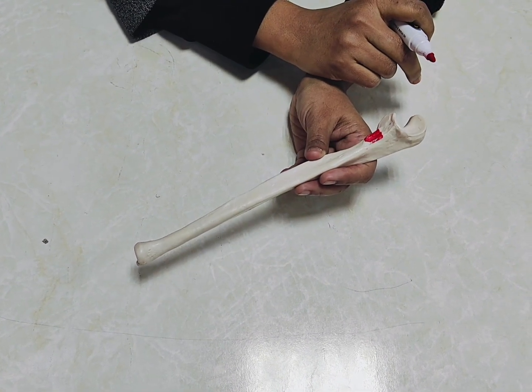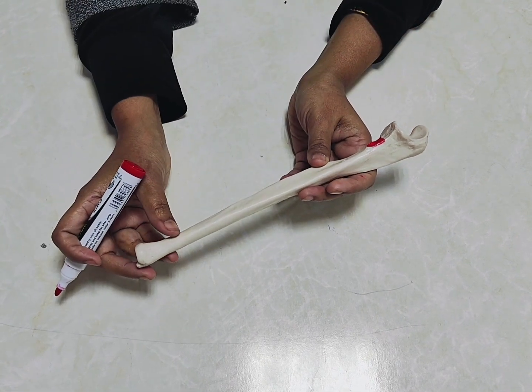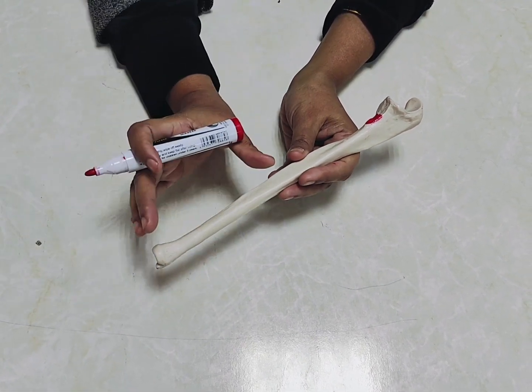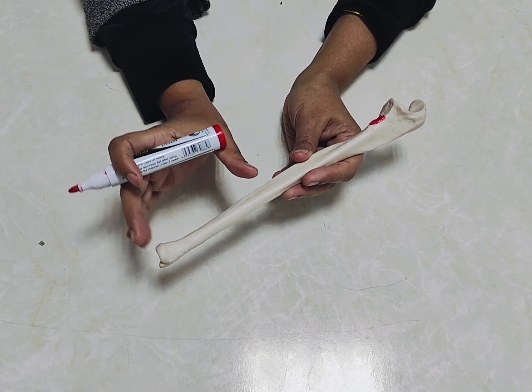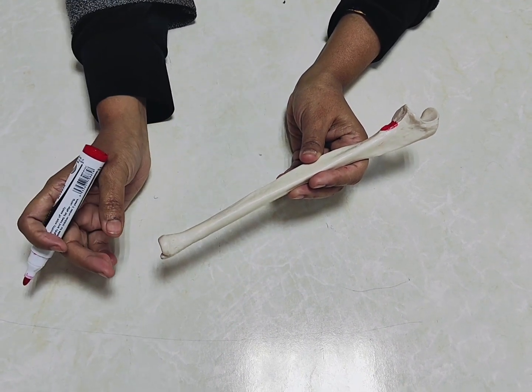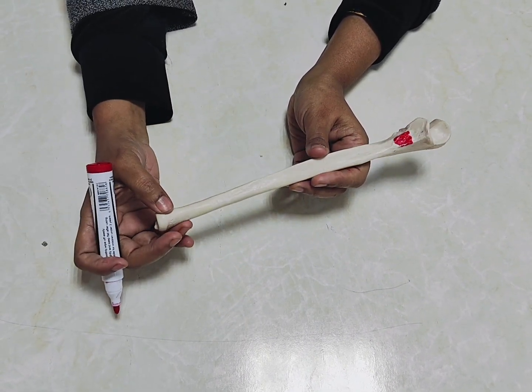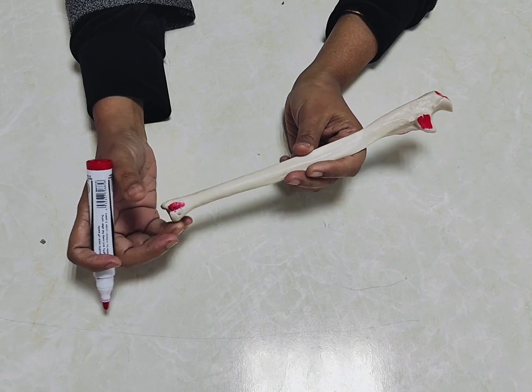If there is distal segment of the ulnar fracture plus inferior radioulnar joint dislocation, we call it Galeazzi fracture.